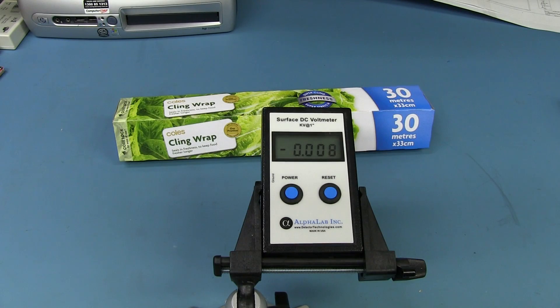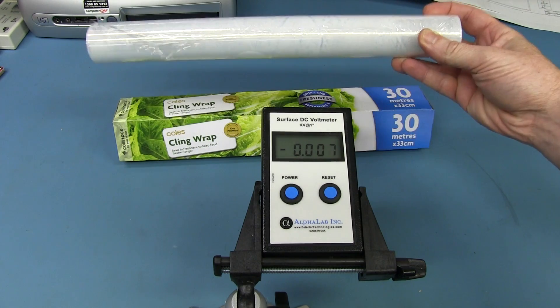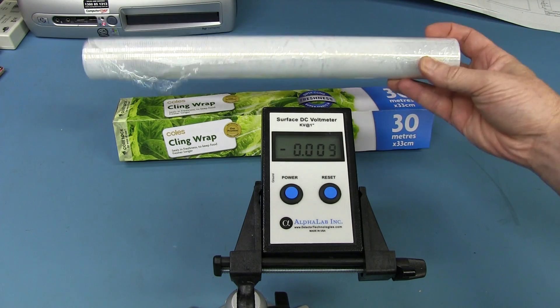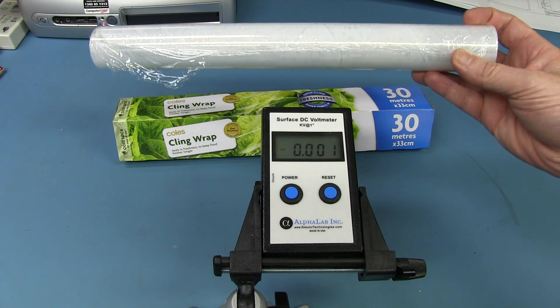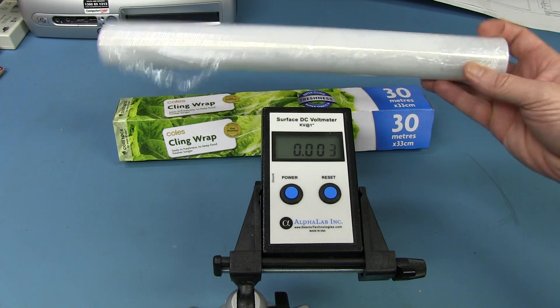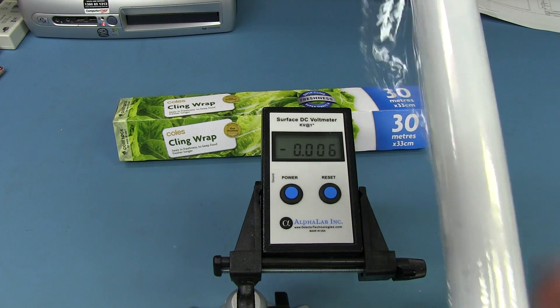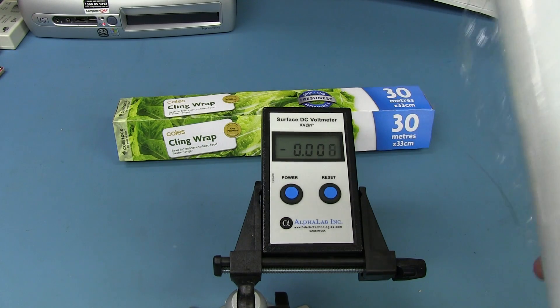In my previous video, a lot of people mentioned the cling wrap I used could generate ESD and that could damage electronics. Well, yes, it's possible. And yes, cling wrap does generate ESD. By the way, if you haven't seen the previous video, I'll link it down below. So I thought I would just measure that and see what the values we actually get, and if it's really going to be a major issue.